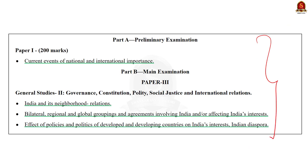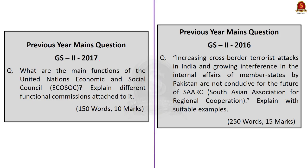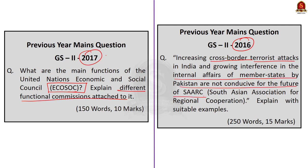Before we start our discussion, take a look at the questions here. The first question is asked in the year 2017: What are the main functions of United Nations Economic and Social Council? Explain the different functional commissions attached to it. The second question is asked in the year 2016: Increasing cross-border terrorist attacks in India and growing interference in the internal affairs of member states by Pakistan are not conducive for the future of SAARC — South Asian Association for Regional Cooperation. Explain with suitable examples.